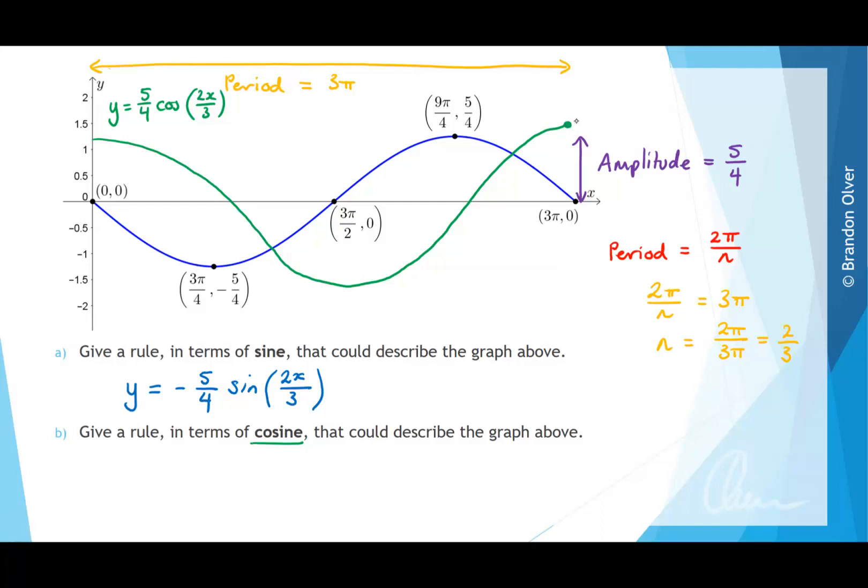So this here would be x is 3 pi, and the y value would be 5 over 4. And down here, this minimum would be at 3 pi on 2, and the minimum would be at negative 5 on 4.